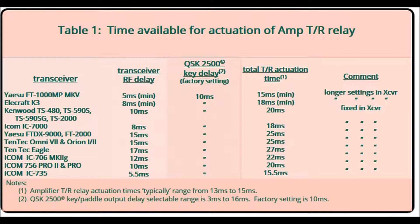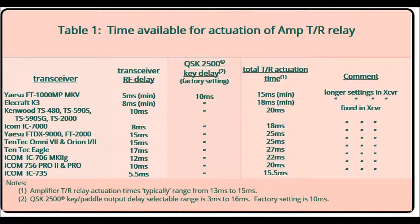As an addendum to the previous presentation, I want to share some data I've collected for the delay of the RF out of the transceiver from the key input. The example used in the presentation was 10 milliseconds, which is typical of the Kenwood TS-480, TS-590, TS-590SG, and the TS-2000. The fastest one I found is the one I have, which is the ICOM 735.